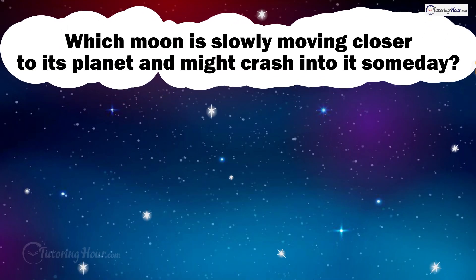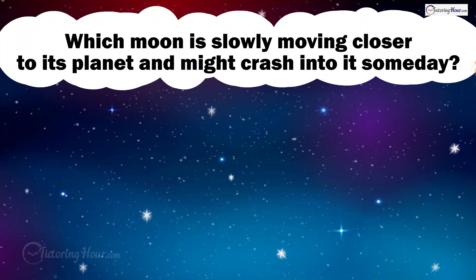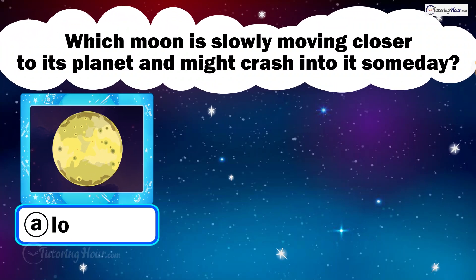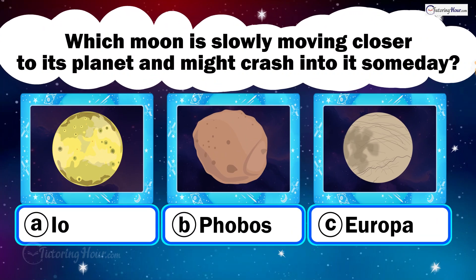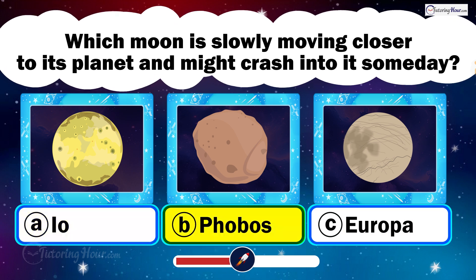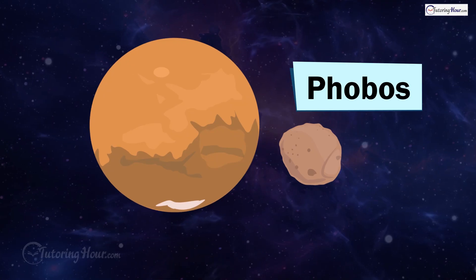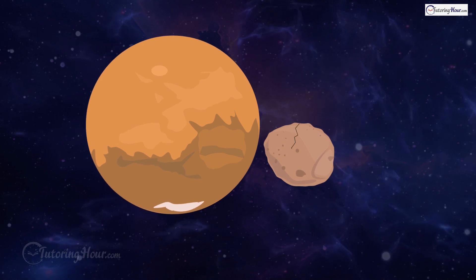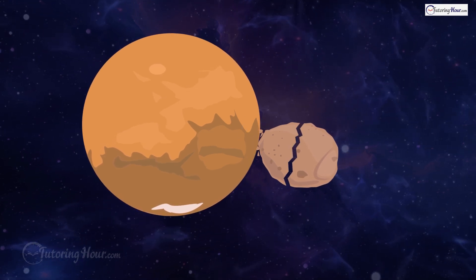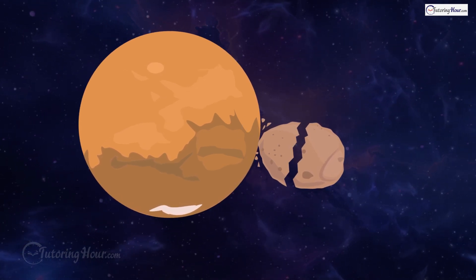Which moon is slowly moving closer to its planet and might crash into it someday? Is it A. Io, B. Phobos, or C. Europa? The correct answer is Phobos. Phobos, a Martian moon, is spiraling inward and could crash into Mars or break apart into a ring in about 50 million years.